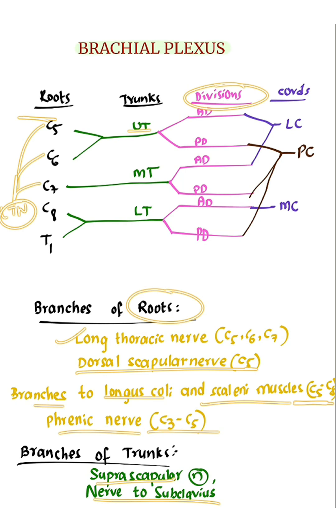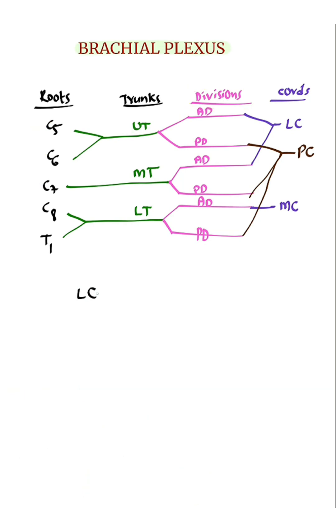Divisions do not give any branches. Branches of cords: Lateral cord gives 3 branches.